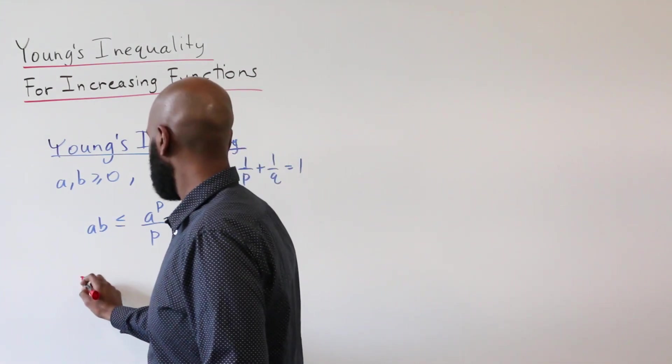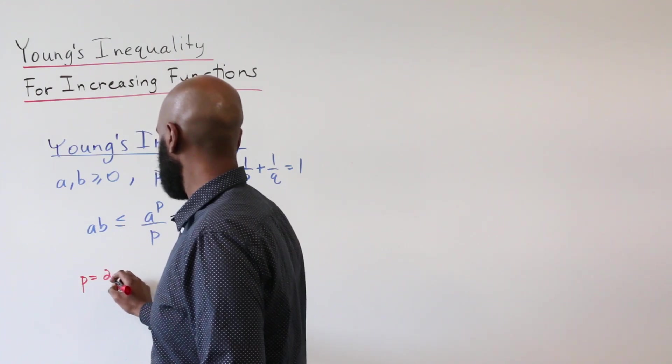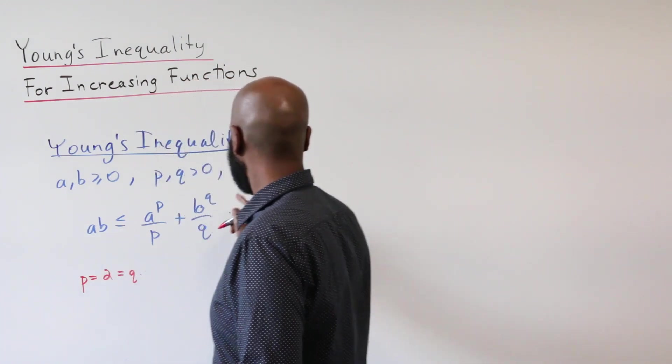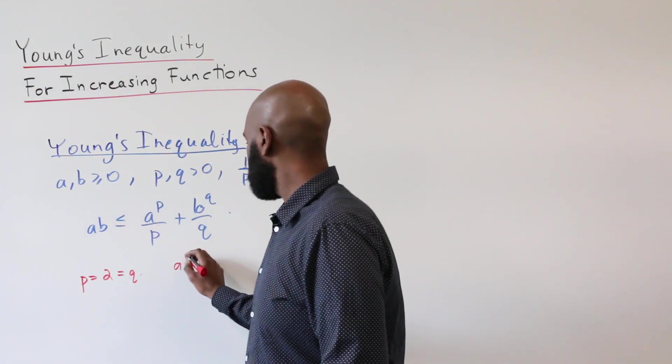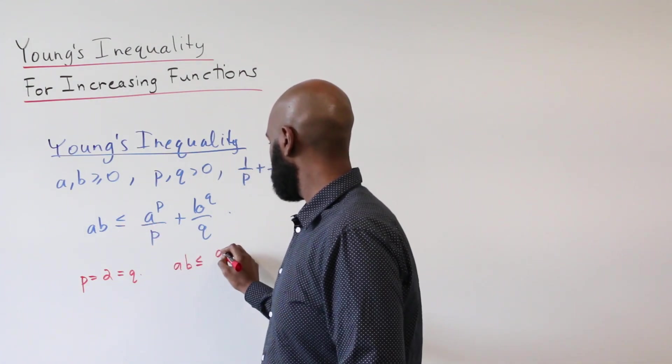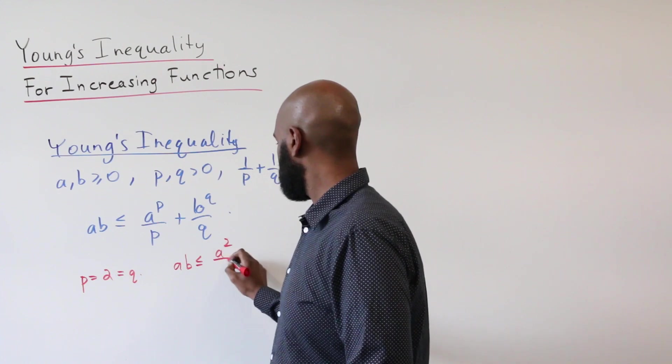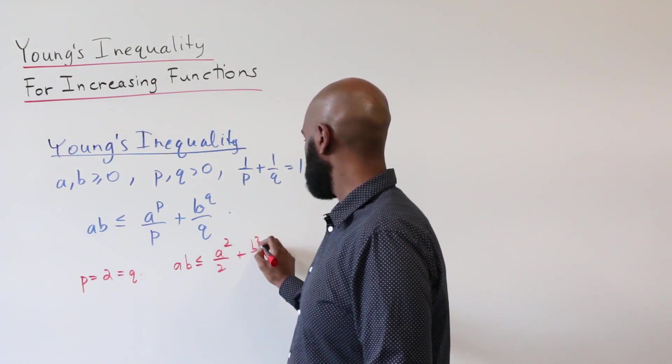So an example of this is if we set P and Q to both be 2, then we'll have a half plus a half is 1 and this inequality will say AB is less than or equal to A to the 2 over 2 plus B to the 2 over 2.